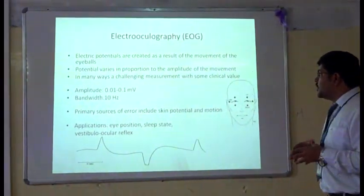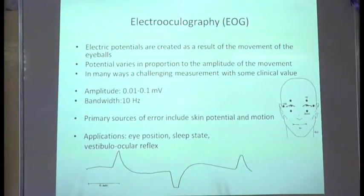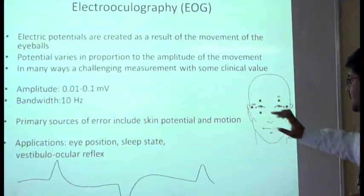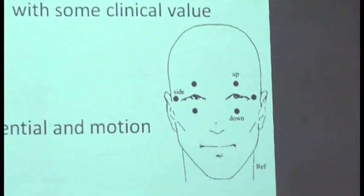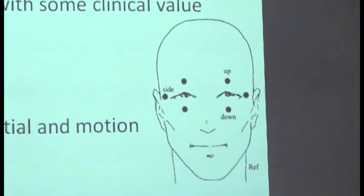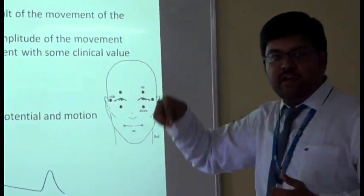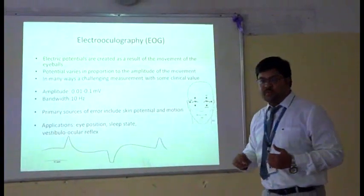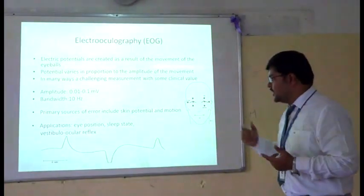Next is Electrooculography or EOG, which measures the electric potential created by movement of the eyeballs. It is recorded by placing electrodes above and below the eye. Its amplitude is 0.01 to 0.1 millivolt and bandwidth is 10 Hz. The primary sources of error are skin potential from the electrodes placed on the skin, and motion artifacts due to eye movement.